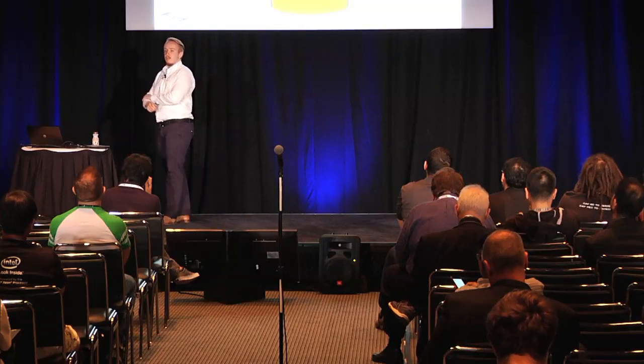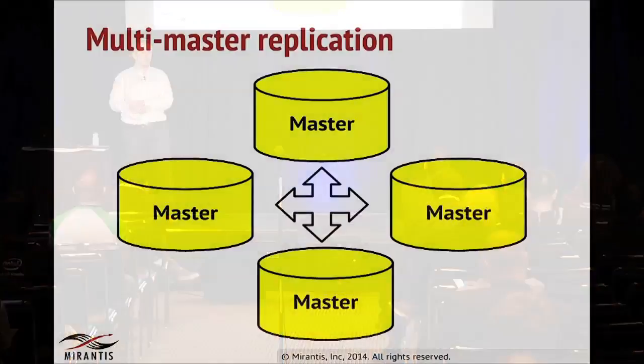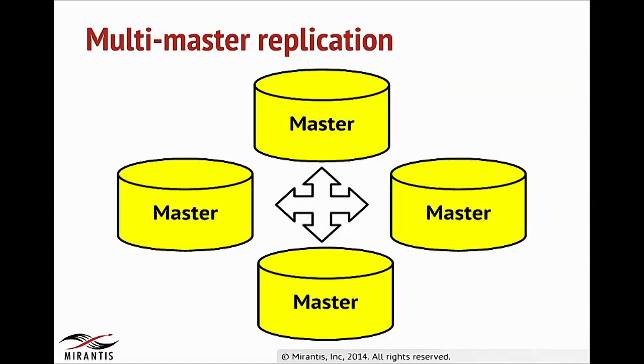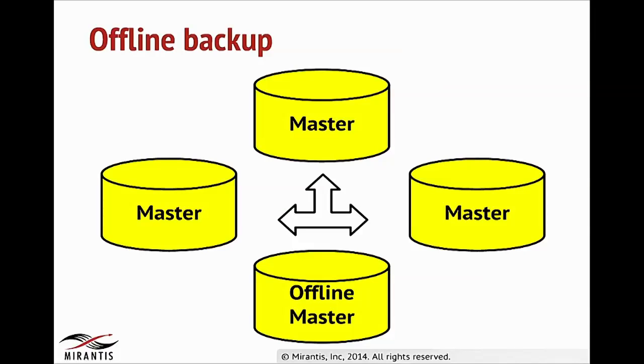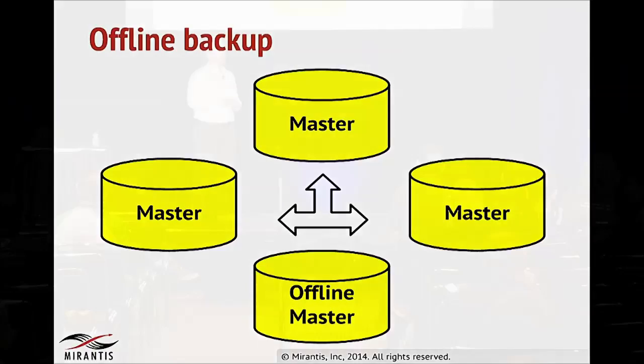The next use case for cross-region and cross-host deployments is multi-master replication, where each region and host contains only one master from the replication set. One use case that can be accomplished within multi-region deployment is offline backup. By having a replication set defined as multi-master replication, we can take one of the instances out of the replication set and shut it down to take a consistent backup.